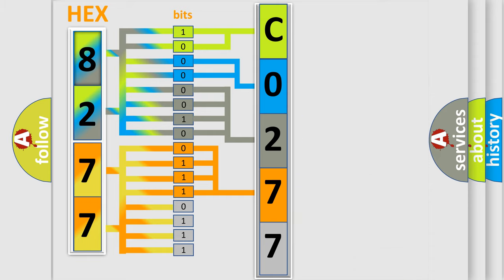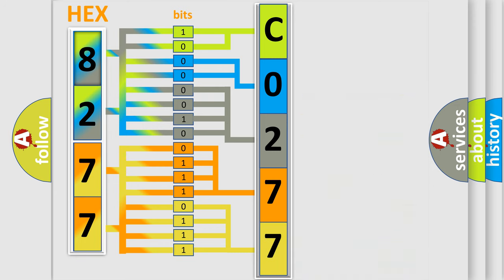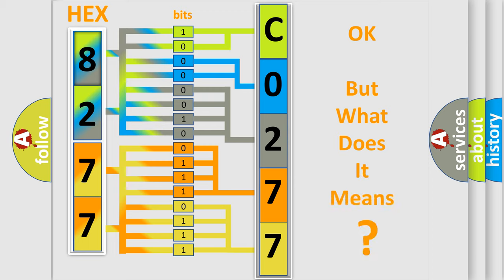A single byte conceals 256 possible combinations. We now know in what way the diagnostic tool translates the received information into a more comprehensible format. The number itself does not make sense to us if we cannot assign information about what it actually expresses.